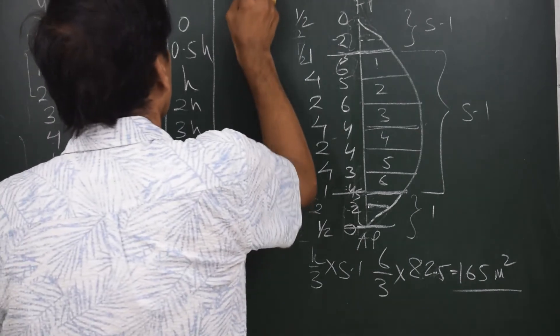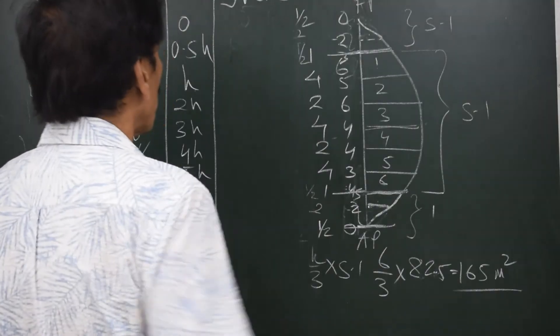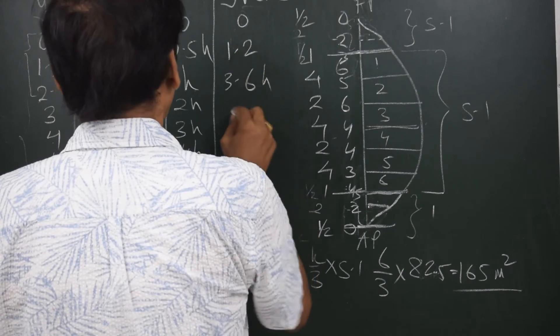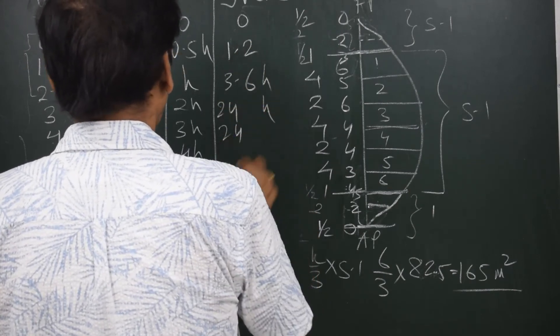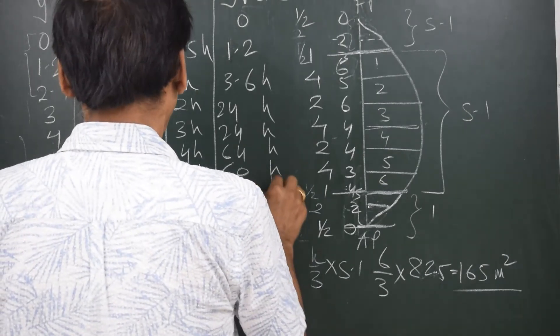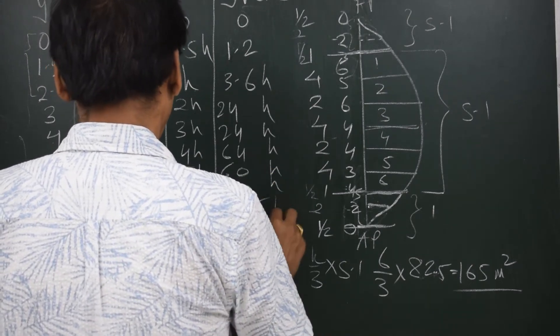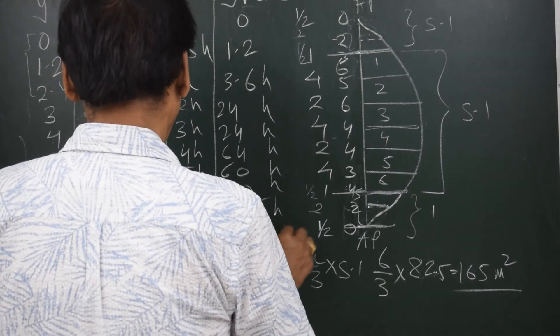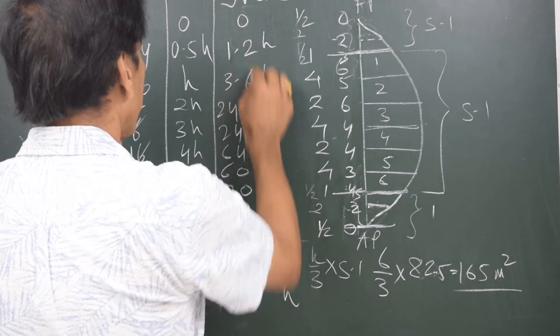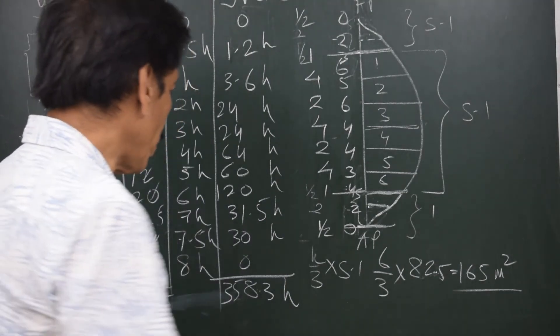Now the next column is the product. So I will write down Y times X times SM over here. And this means the product of column number 3 and 4. So it becomes 0 here, 2.4 into 0.5, that is half of 2.4, 1.2, then 3.6H, 24H, 24H, 64H, 60H, 120H, 4.5 into 7, 31.5H, 30H and 0. So the total would be 358.3H.